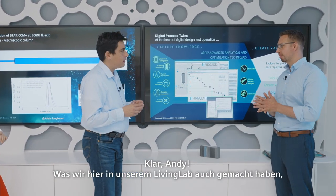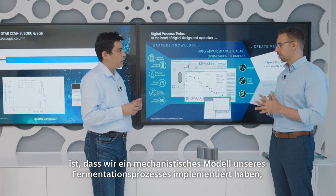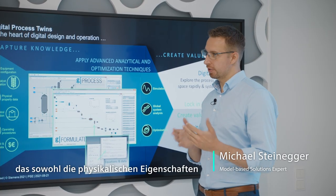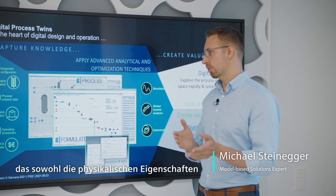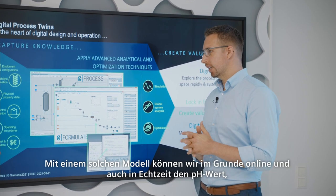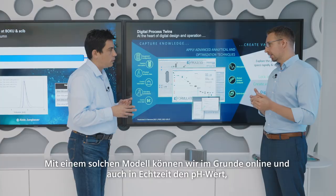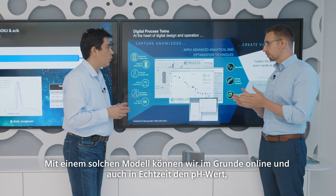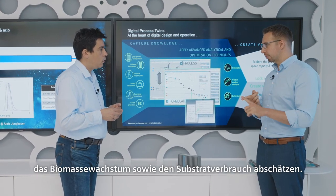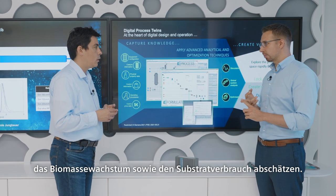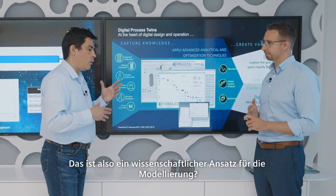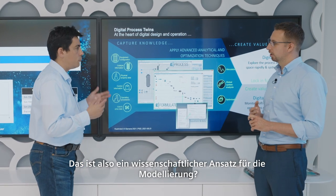What we did here in our Living Lab, we implemented a mechanistic model of our fermentation process, which takes into account basically the physical properties as well as the biochemical reactions. With such a model, we can estimate in an online way and in real-time the pH value, the biomass growth, as well as the substrate consumption.